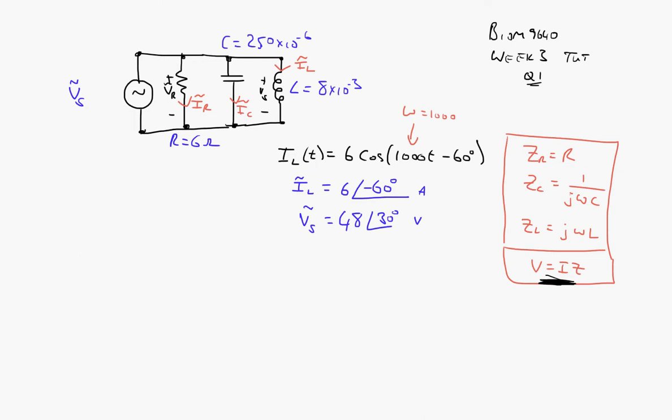So let's draw where this IS would be. IS would be leaving here, like this. This would be IS, and it's a phasor. Well, it's a sinusoid, but we're going to represent it as a phasor.